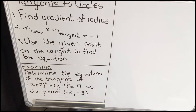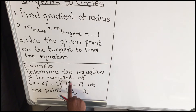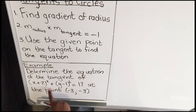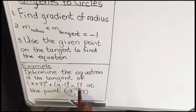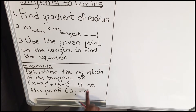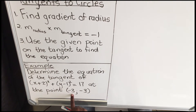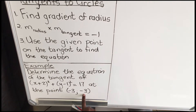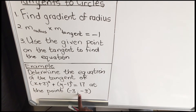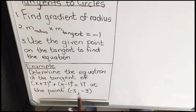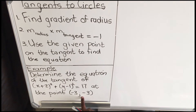Here's an example. They say: determine the equation of the tangent of the circle with radius √17 at the point (−3, −3). So the point that you are given is (−3, −3). This point is on the tangent. So the first thing that you must do is find the gradient of the radius.